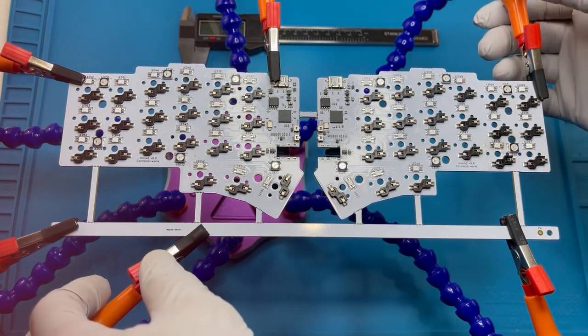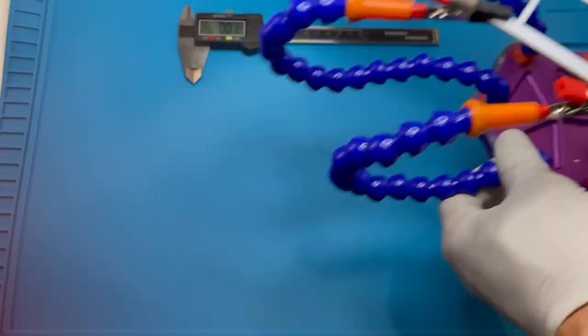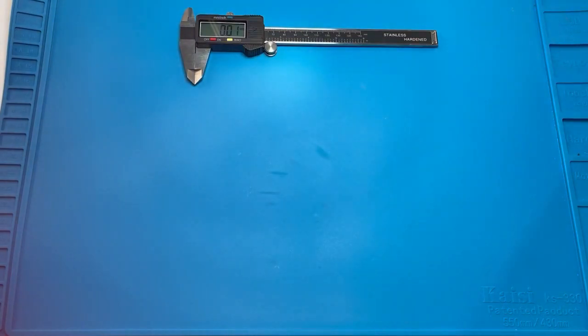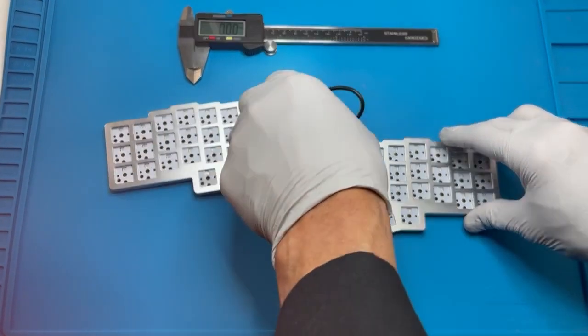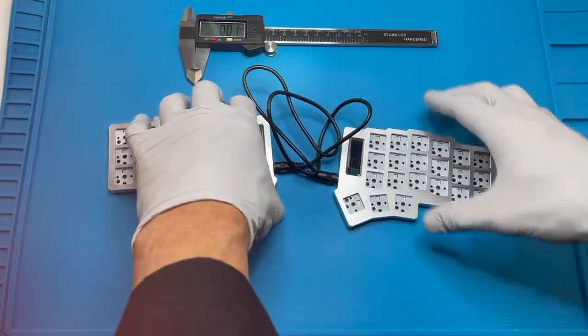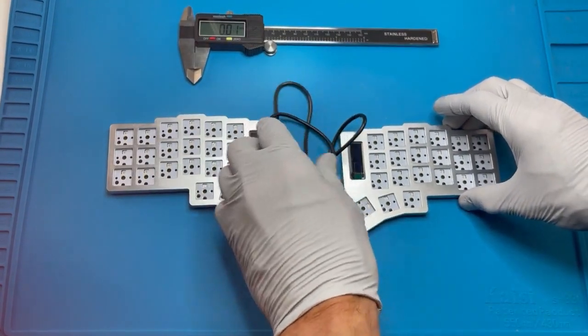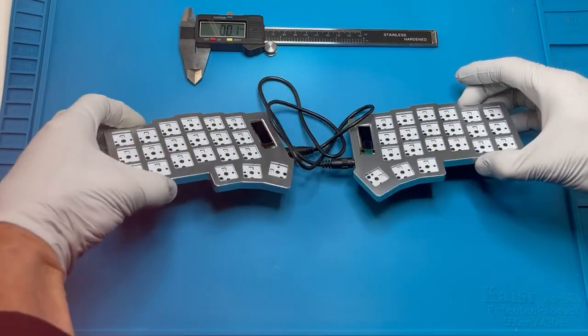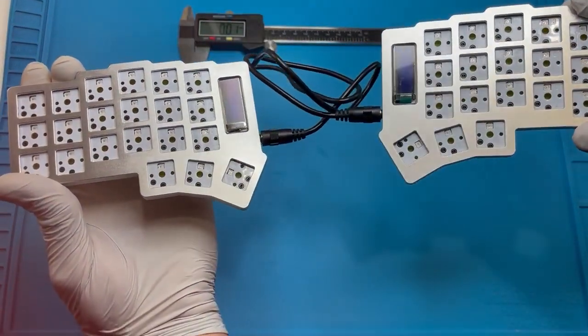So that's an overview of the main board. And here it is in the case, so it comes with a CNC machined aluminum case, also extremely thin, extremely low profile.